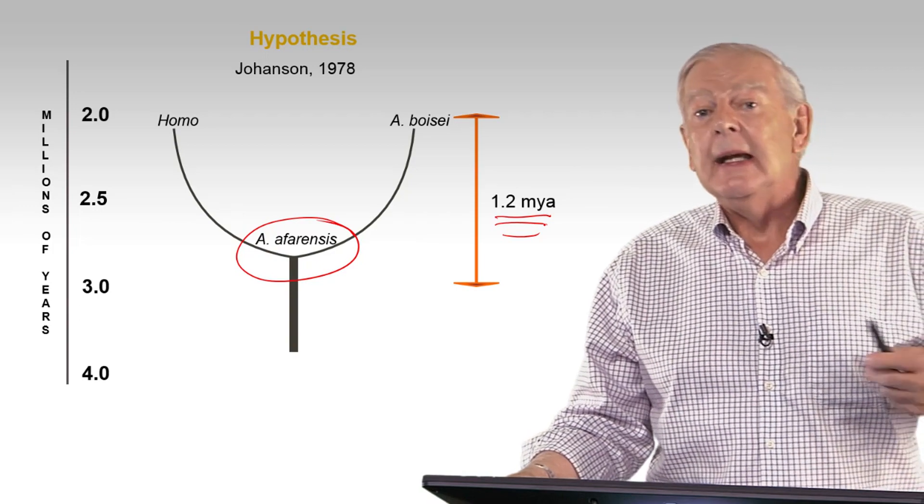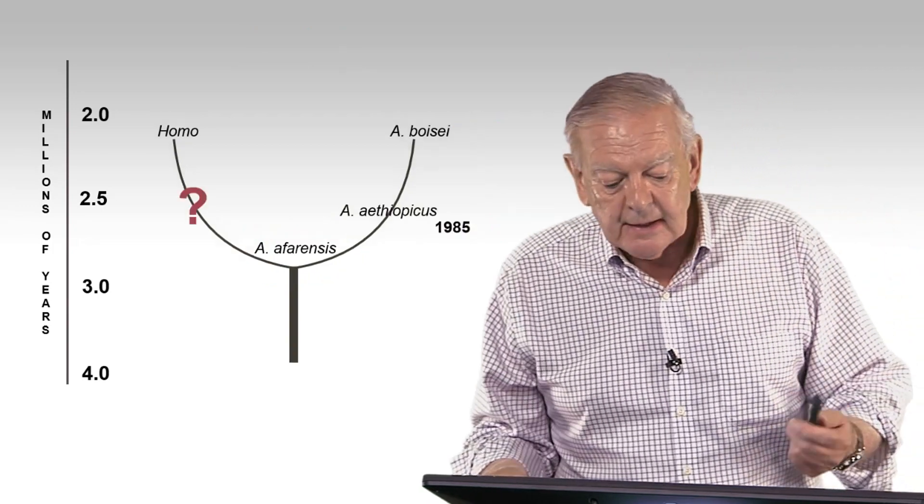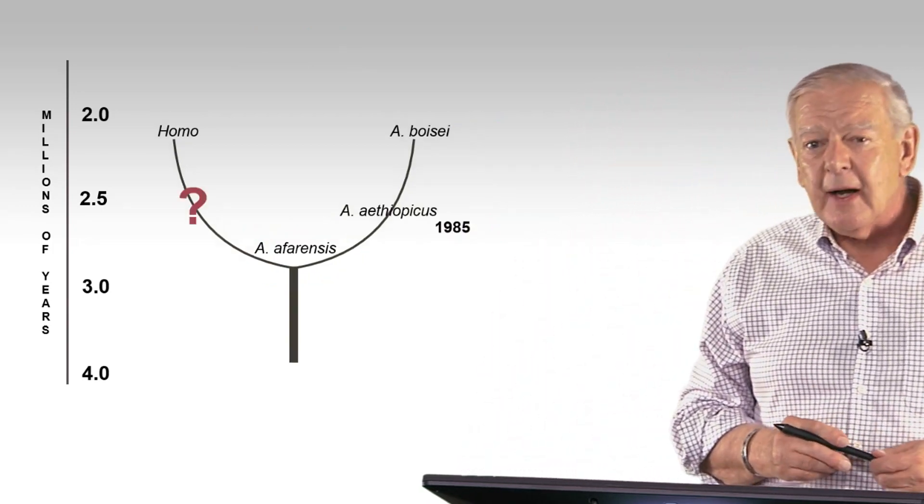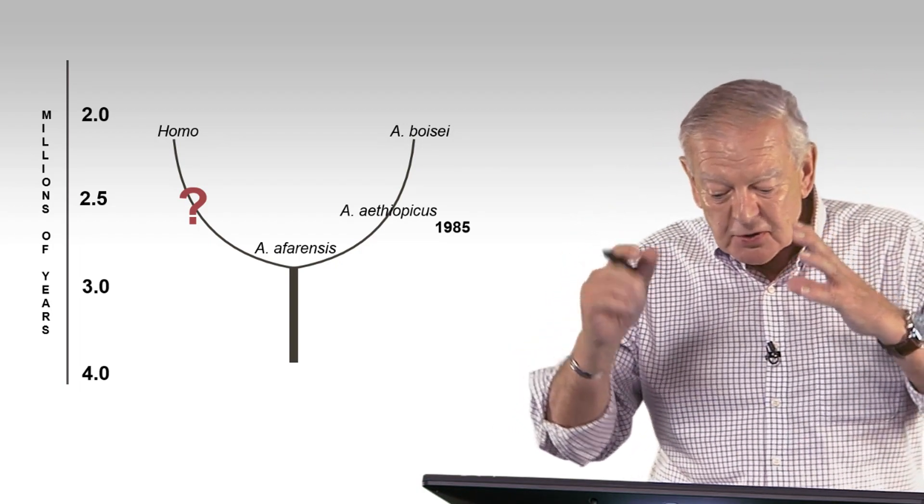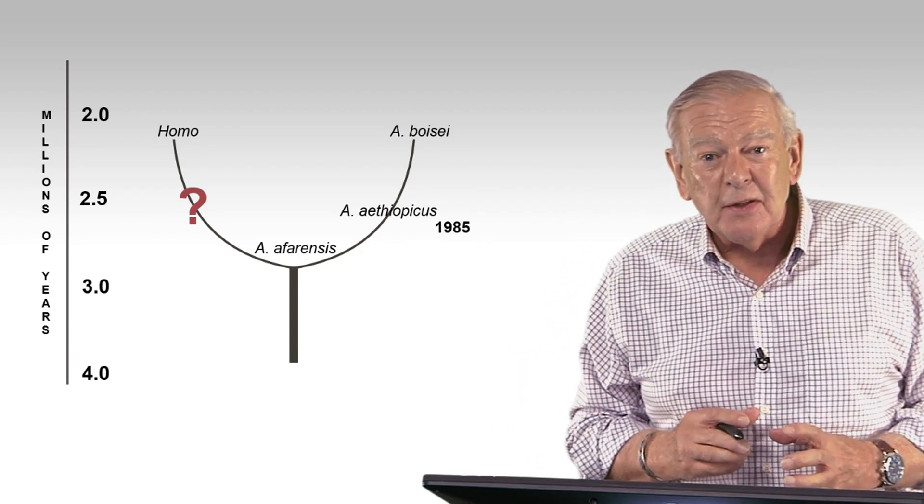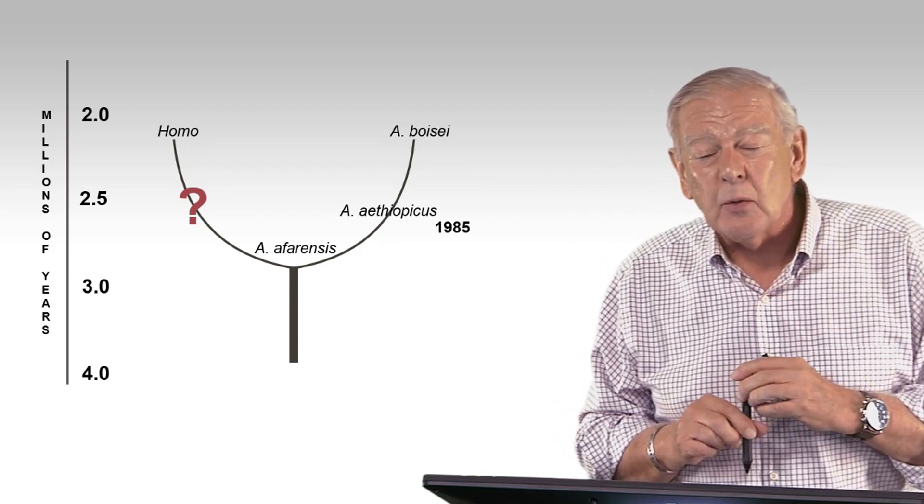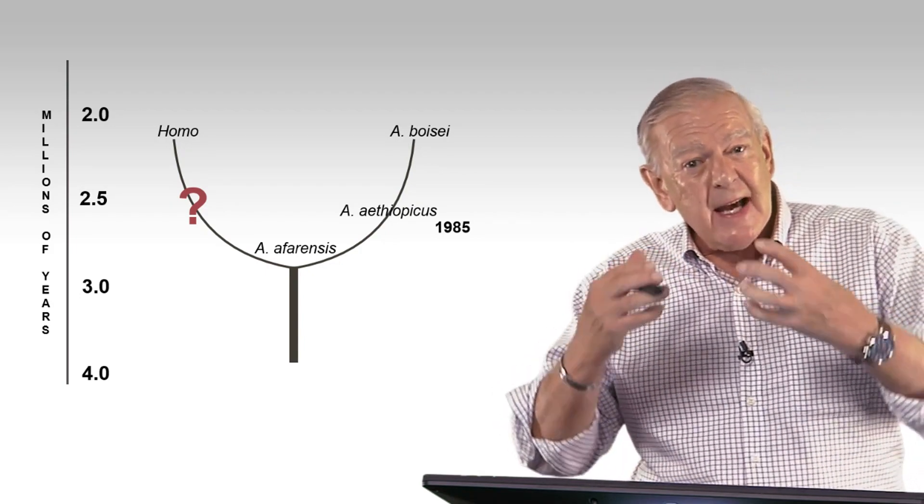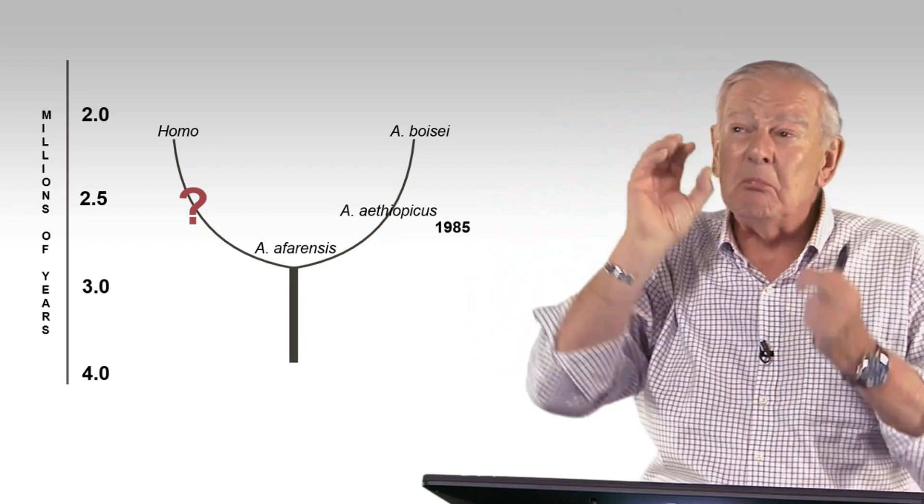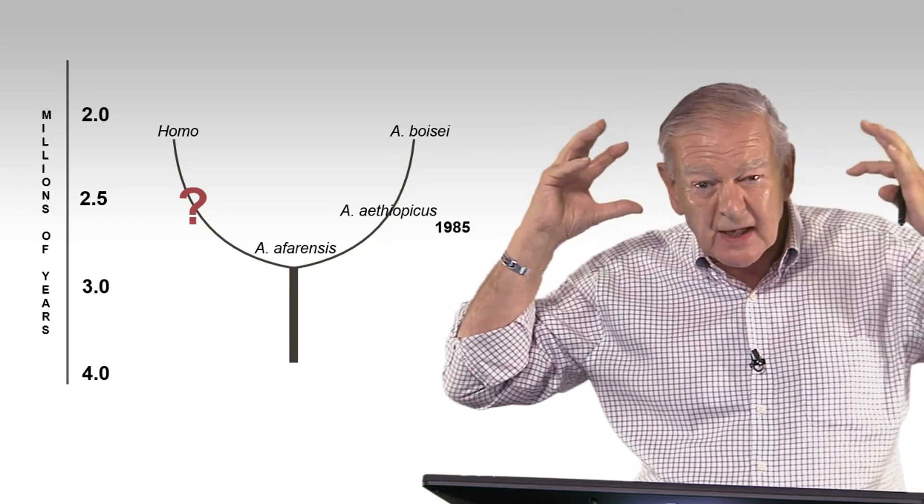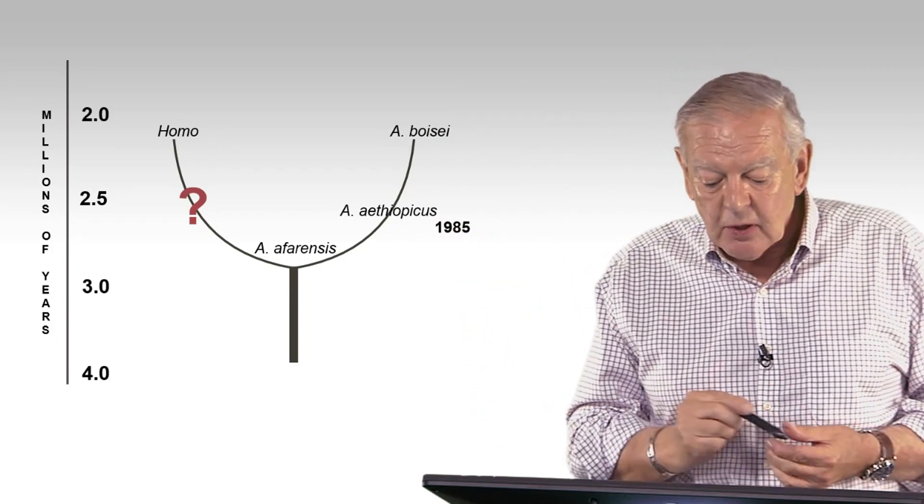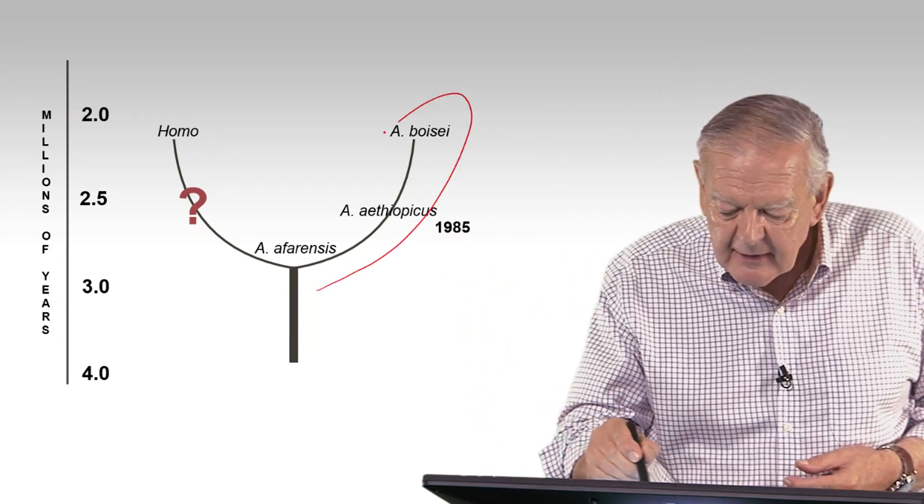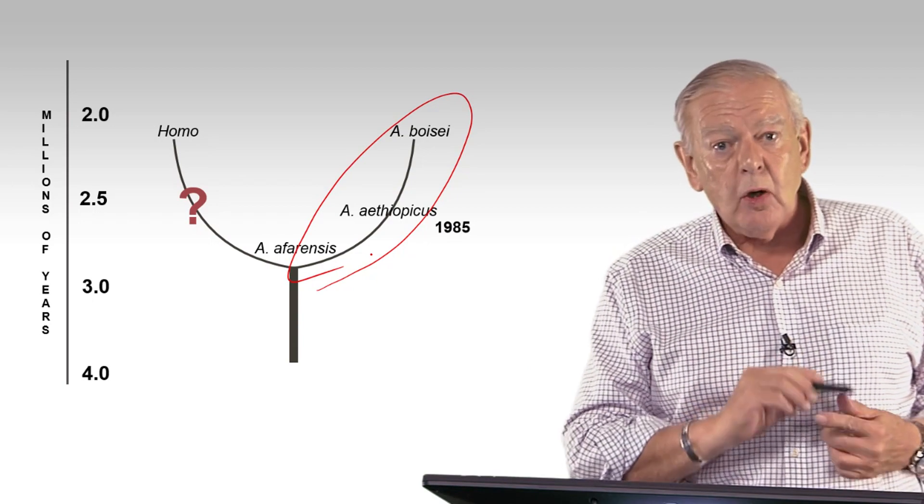So what happened? It got tested. It got tested in 1985 with the discovery of the black skull, right? Australopithecus Aethiopicus, the one found at Lake Turkana by Alan Walker. And it was intermediate in its anatomy. Remember, it had a big crest, it had big teeth, it had huge muscle attachments, but it had a projecting face like Afarensis. So that kind of strengthened that lineage, but no Homo. So what was happening on that side?